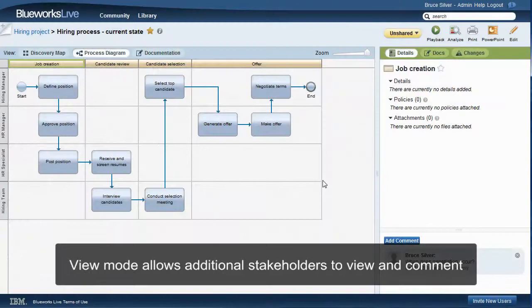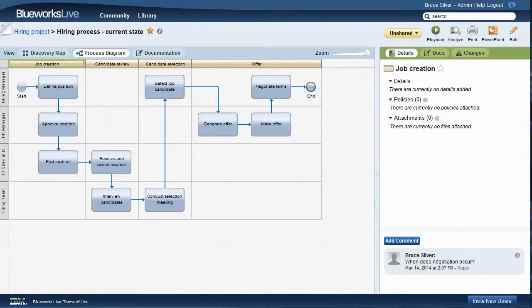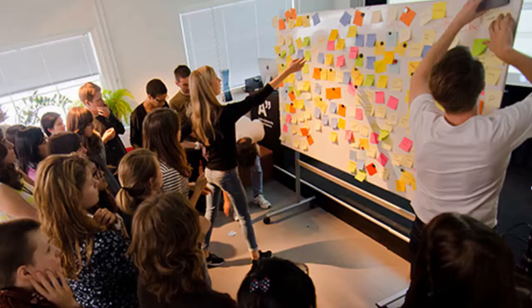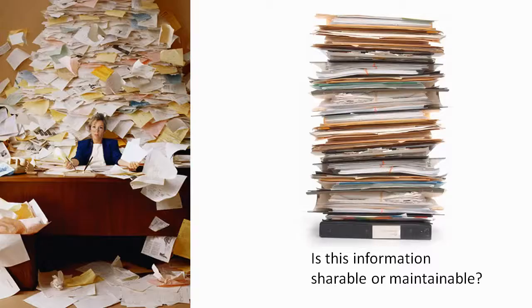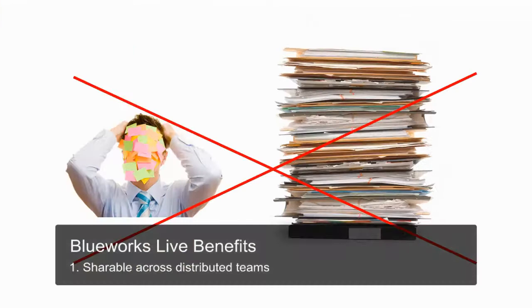Let's quickly recap the reasons why Bluix Live can engage business users in process improvement projects in a way that whiteboards and stickies or software tools like Visio simply cannot. First, whiteboards and stickies are useful in live face-to-face meetings, but outside those meetings their value is lost. The information is difficult to maintain, to share, to find, or reference after the fact. Those are 20th century tools, and this is the 21st century. We need information that can be assembled by distributed teams, by virtual teams, and viewed and discussed by all stakeholders, not just those present at the face-to-face meeting.